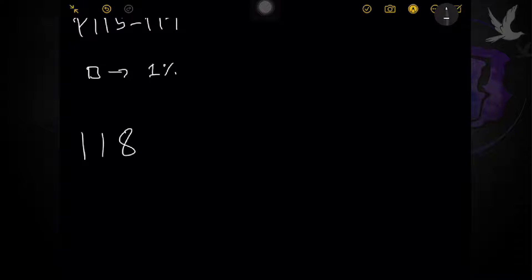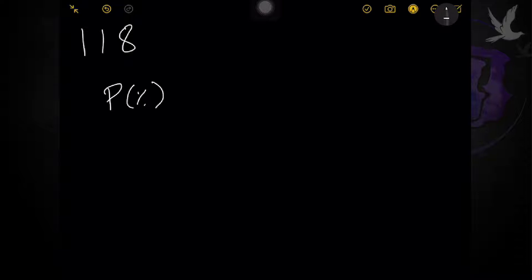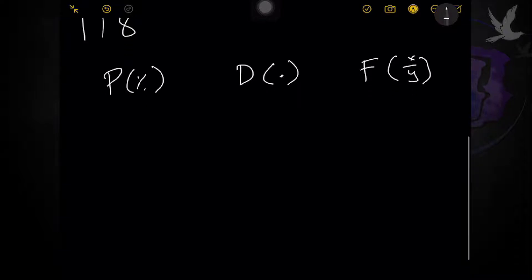Moving to page 118, this is the part where you're going to change a percentage to a decimal and to a fraction. It's a bit more involved, especially decimal to fraction, but don't worry. We have percentage — I'll just note it as P — decimal as D, and fraction as F, represented as X over Y. That's just a symbol showing it is a fraction. So, changing a percentage to decimal first — for example, let's say 12%.